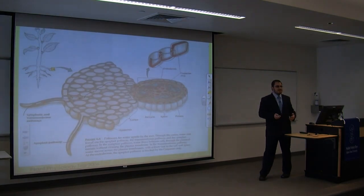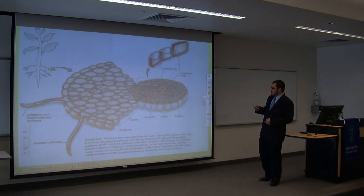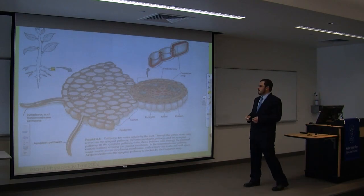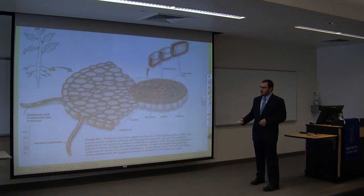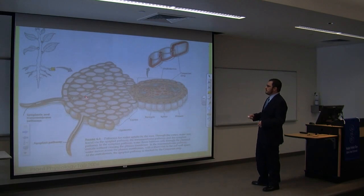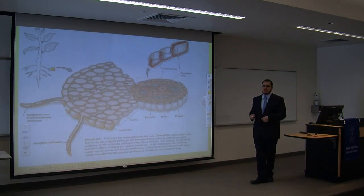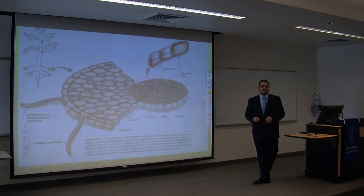There are two ways that water and nutrients get into the plant through the root. The first way is the symplastic and transmembrane pathway, where water enters through the root hair and travels through the cytoplasm of the cells, finally ending up in the xylem at the middle of the root. The second way is the apoplastic pathway, where water enters through the root hair and gets transferred between the cell wall and cell membrane, again ending up in the xylem.